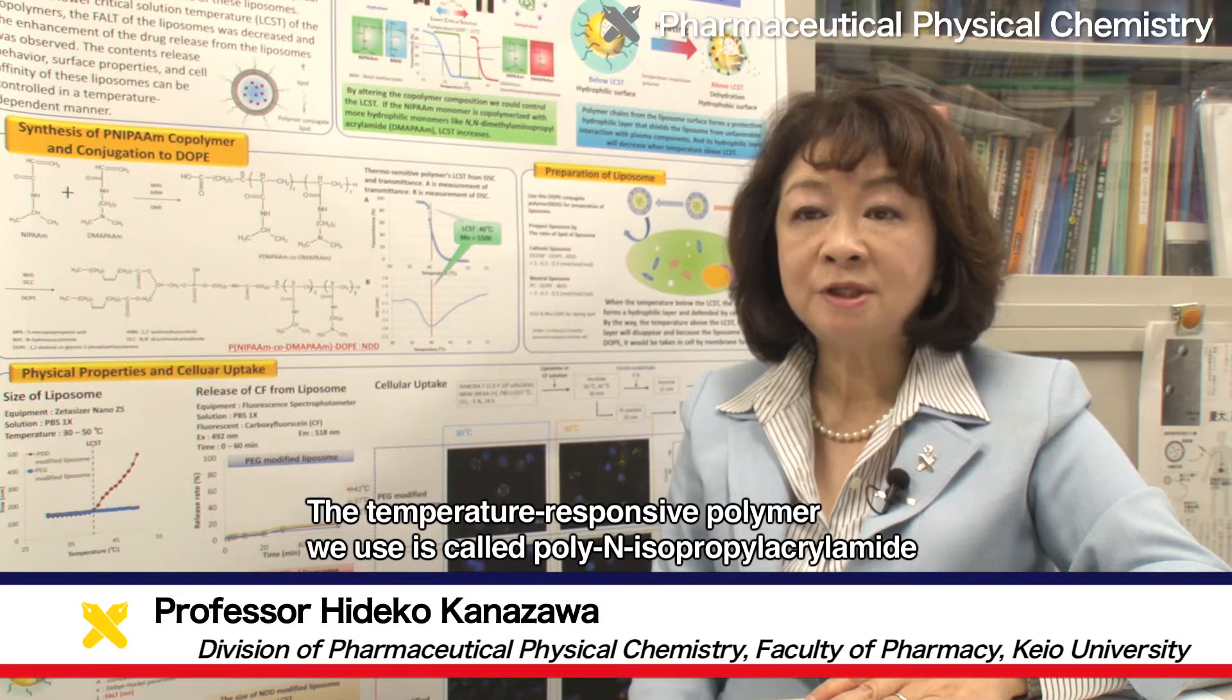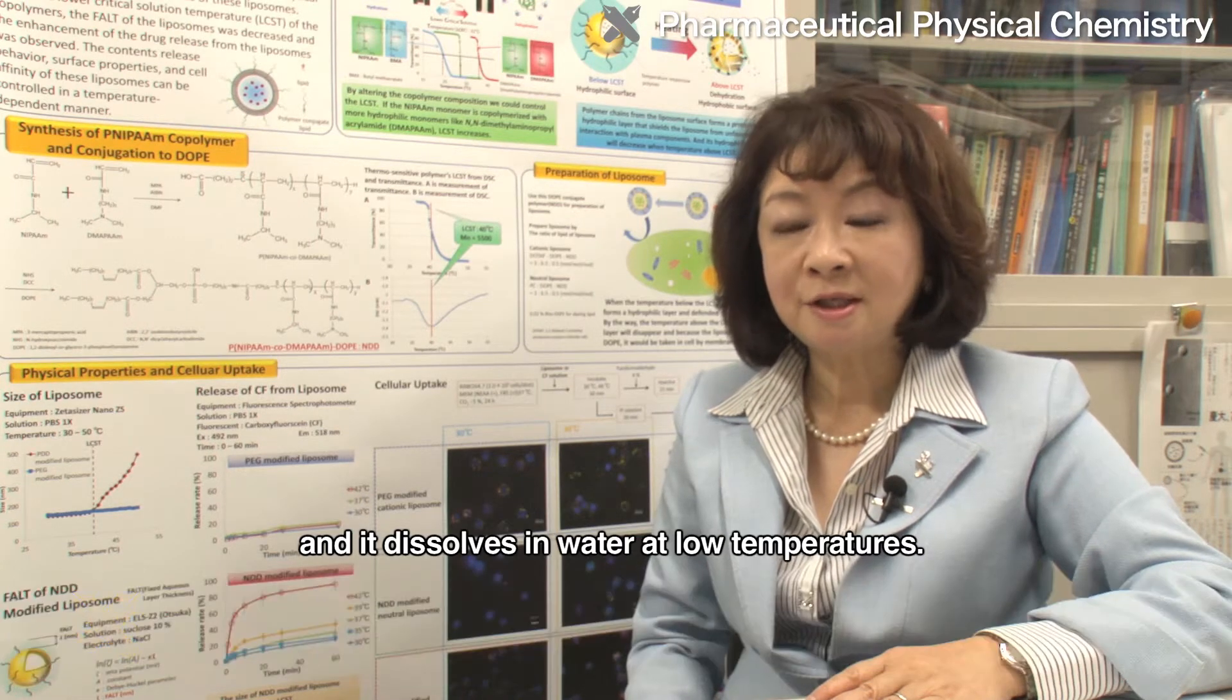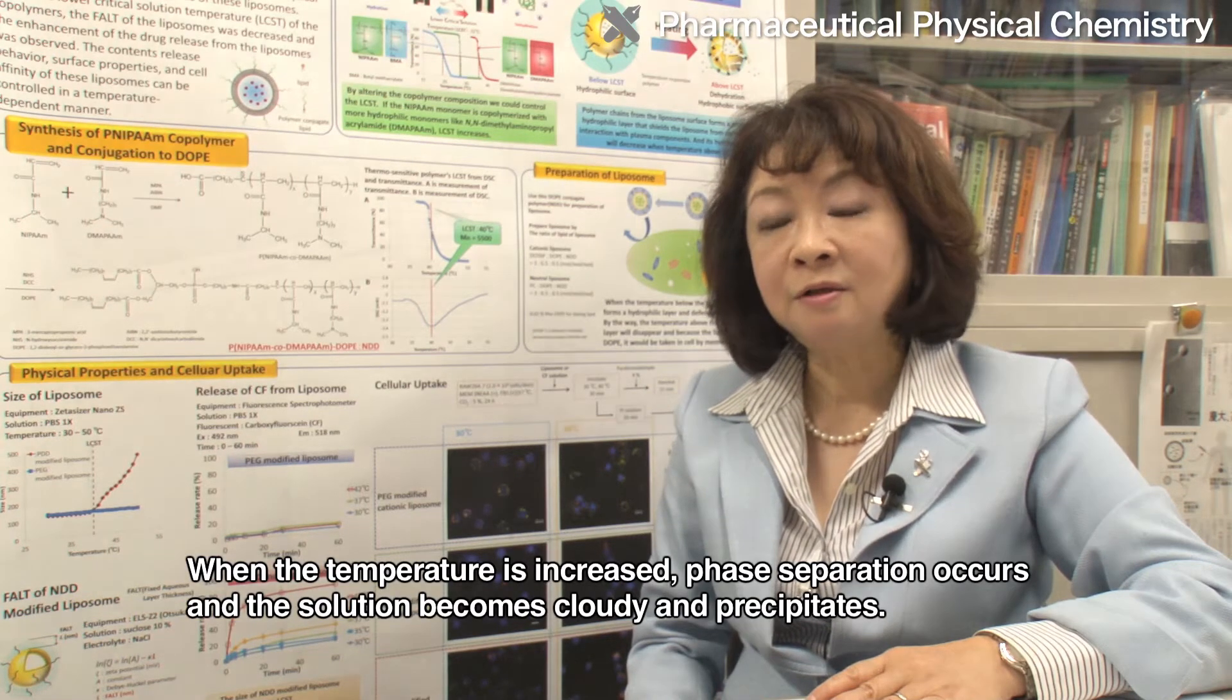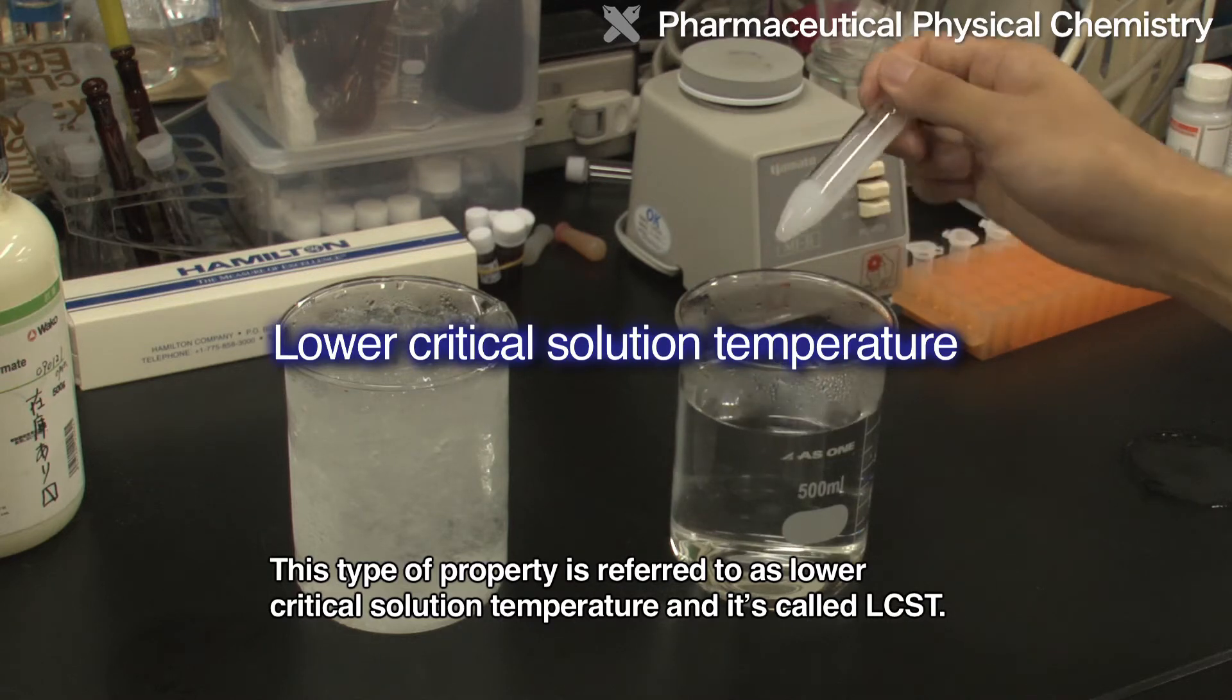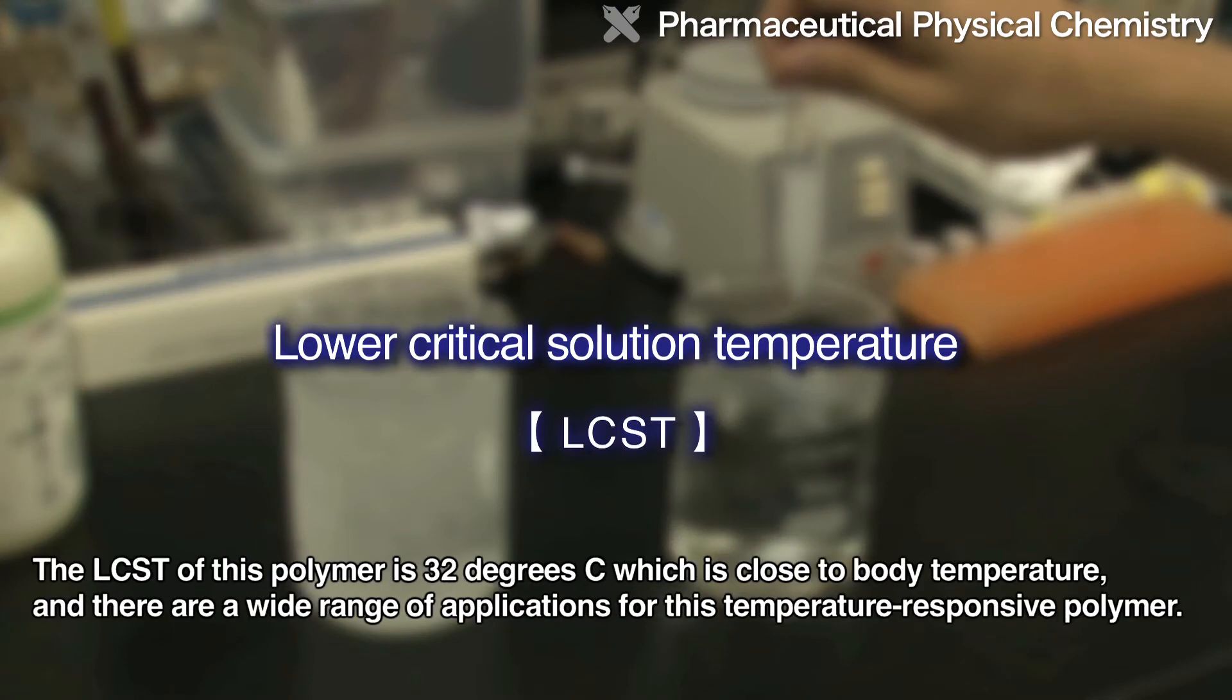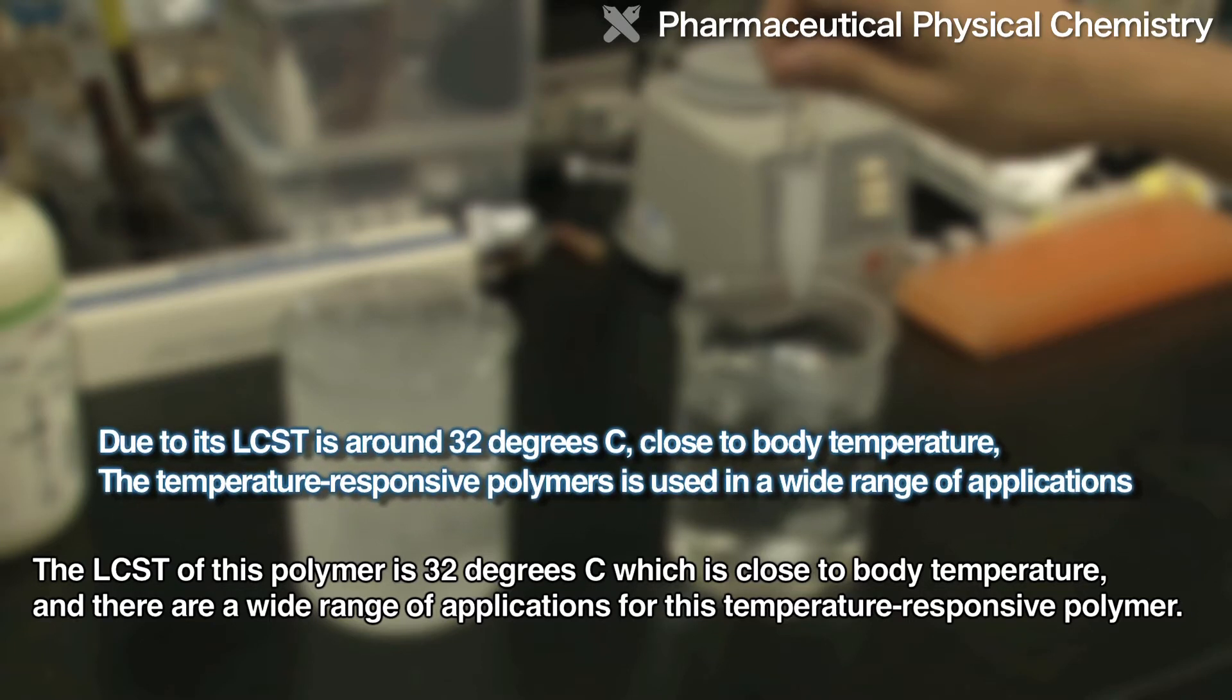Poly-N-Isopropyl Acrylamide undergoes phase separation and becomes turbid and precipitates. This type of property is referred to as lower critical solution temperature and it's called LCST.